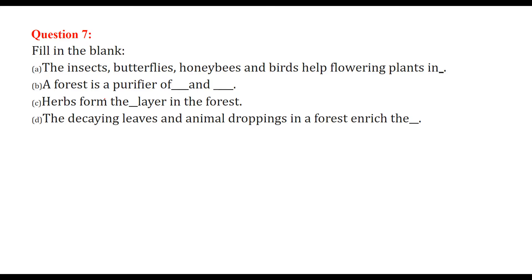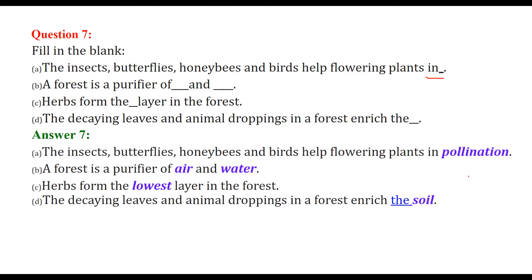Fill in the blanks: insects, butterflies, honeybees and birds help flowering plants in pollination. A forest is a purifier of air and water. Herbs form the lowest layer in the forest. The decaying leaves and animal droppings in a forest enrich the soil.